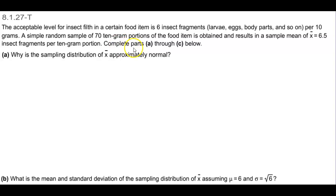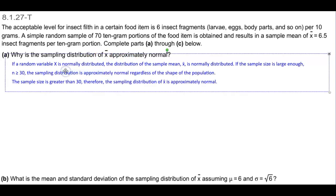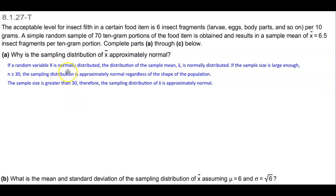We want to complete parts a through c. Part a: why is the sampling distribution of the sample mean approximately normal? Well, if a random variable x is normally distributed, the distribution of the sample mean is normally distributed. And if the sample size is large enough where n is greater than or equal to 30, the sampling distribution is approximately normal regardless of the shape of the population.